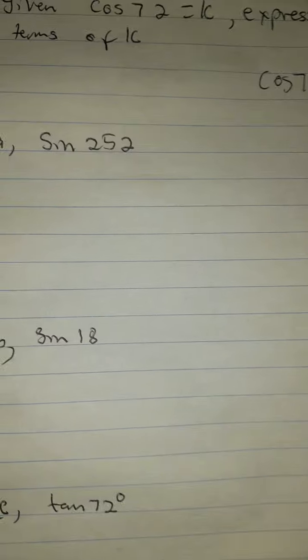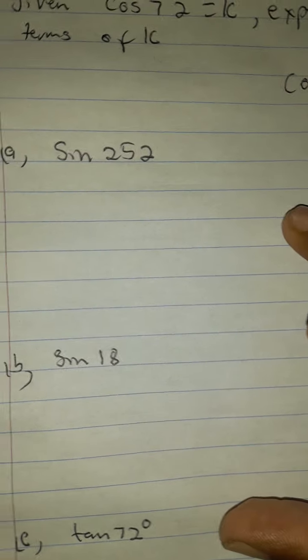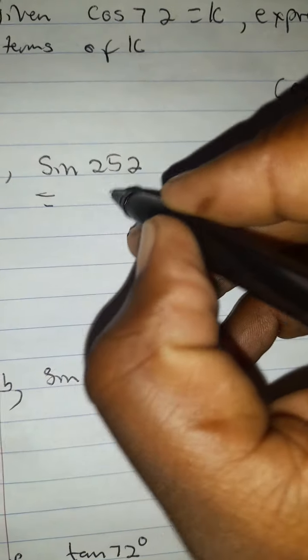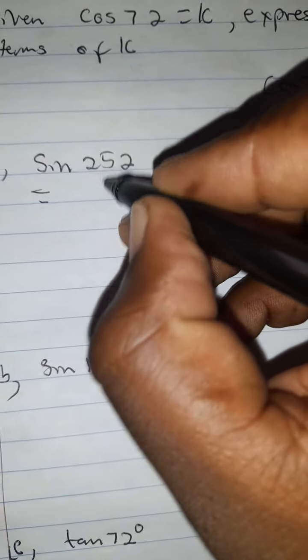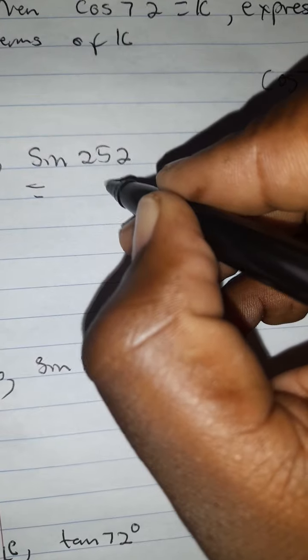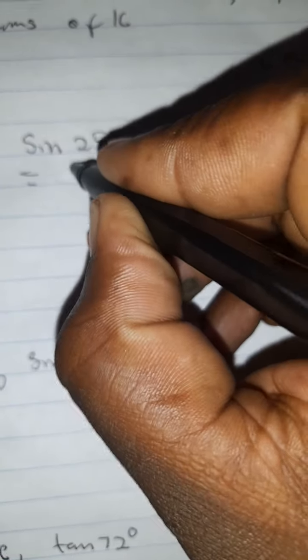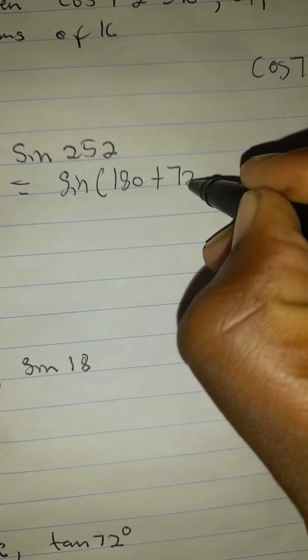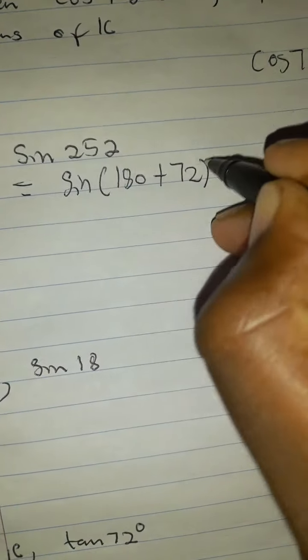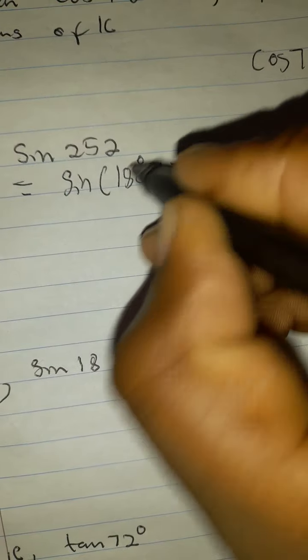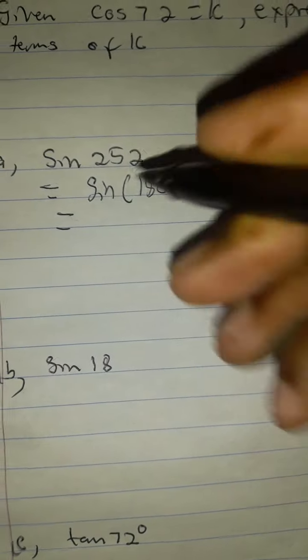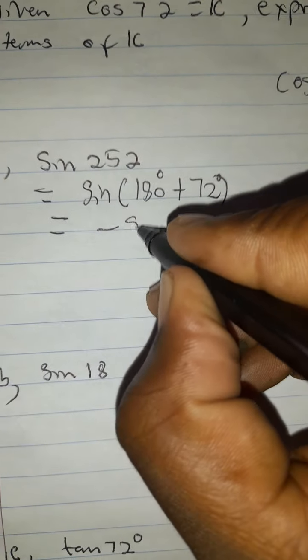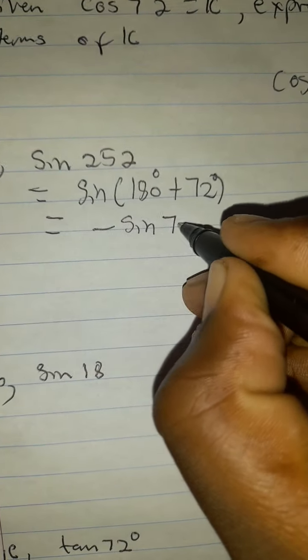We are given sine 252. When we reduce this, when you say 252 minus 180, it gives you 72. So it's the same as sine 180 plus 72, which gives you 252. Sine at the third quadrant is not home for sine. So it will be negative sine 72.